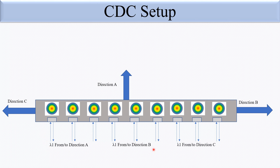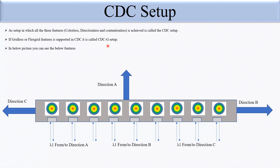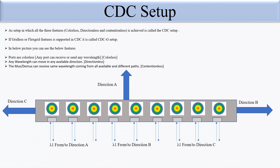For contentionless, lambda 1 is coming from direction A, the same lambda 1 is coming from direction B on another port, and the same lambda 1 is coming from direction C on yet another port. This is the contentionless setup. A system in which you can achieve colorless, directionless, as well as contentionless is called the CDC setup. If gridless or flex grid feature is also supported, it is called the CDCG setup. Ports are colorless — any port can send or receive any wavelength; any wavelength can move in any available direction (directionless); and the mux/dmux can receive the same wavelength coming from all available different directions (contentionless).